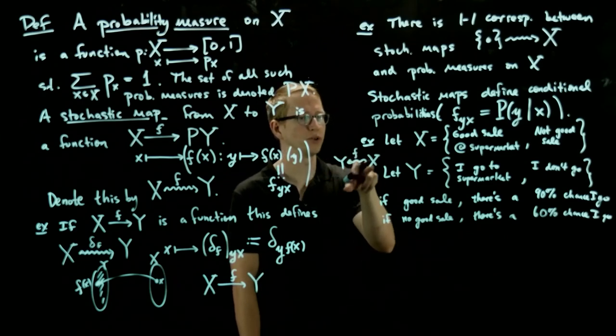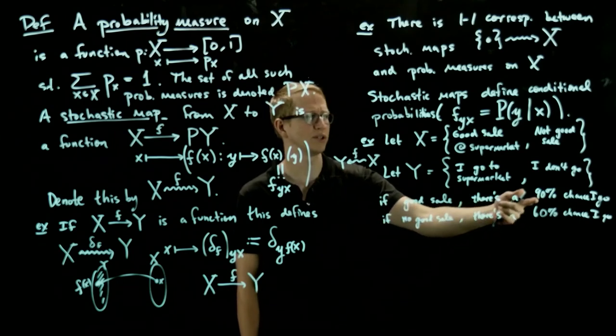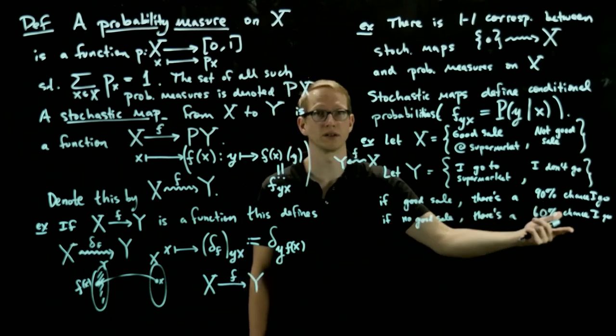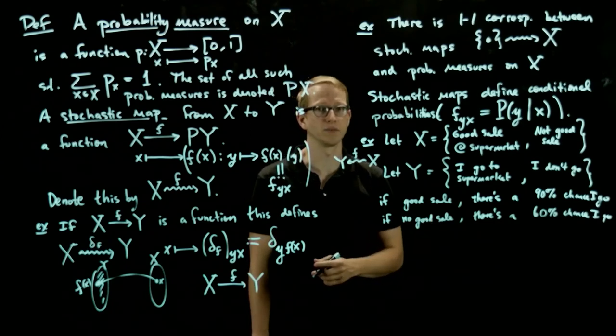And with this information, we can define a stochastic map from X to Y. So this actually defines the stochastic map, and we'll come back to this in several examples that we'll look at later on because it's a nice, simple example. The reason you can figure out what the rest of this is is just by using probabilities, because if there is a good sale, the chance that I go is 90%, then there's a 10% chance I won't go, and conversely, if there isn't a good sale, then there's a 40% chance I don't go. So that defines a stochastic map.